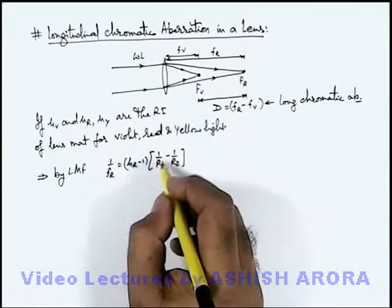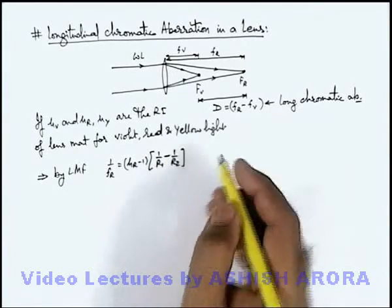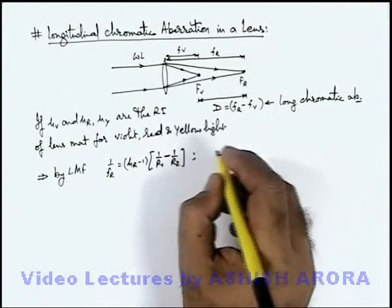an equiconvex lens it can be written as 2/r as the signs of the two radii are different, but in general we are taking r_1 and r_2.